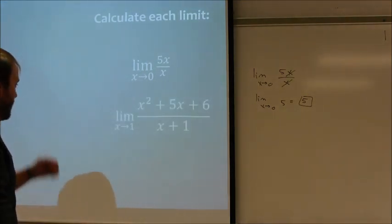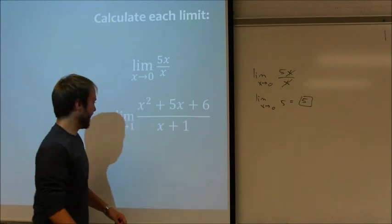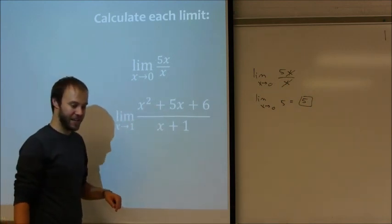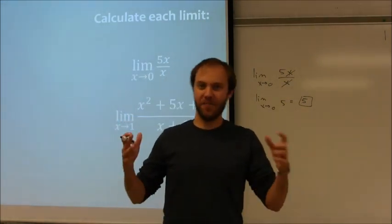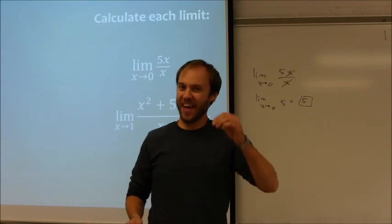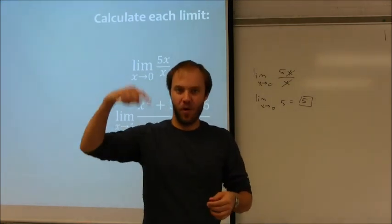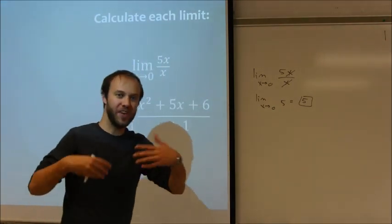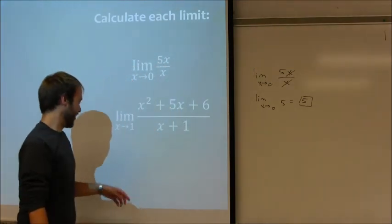For my second limit problem, I want the limit as x approaches 1 of x squared plus 5x plus 6 over the quantity x plus 1. Now, you have a tendency to look at this and think, oh, I need to factor, I need to cancel something. But if you notice, that only needs to happen if you've got something that's written in the form 0 over 0 after you substitute, if you've got that indeterminate form, or if you've got just a 0 in the denominator in general.